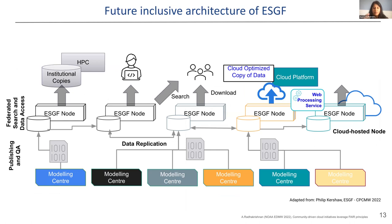In the future, the proposal is to make the ESGF architecture more inclusive, with several different modeling centers coming together in a federated archive of datasets. We now have a containerized version of the Earth System Grid running in the cloud that has populated the datasets we were talking about. But we still need to talk about how we're actually producing those ARCO data sets — and that's what we'll address next.